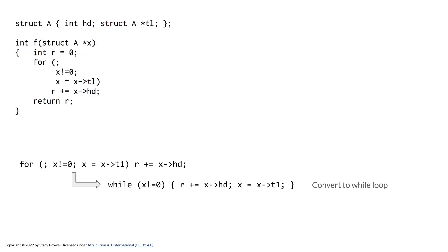The first thing we're going to do is convert it to a while loop. Our condition remains the same: while x is not equal to 0, we do the body of the loop — 'r plus-equals x head' — and then the iteration: 'x gets x tail.' There was no initialization, so don't worry about that. If the while predicate is initially false, we never do the body. That is true for a for loop in C as well. So we've successfully converted our for loop to a while loop.